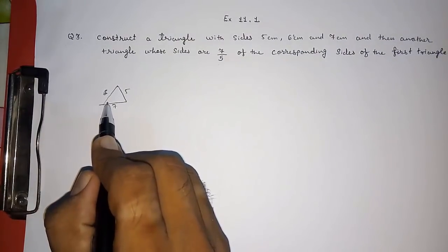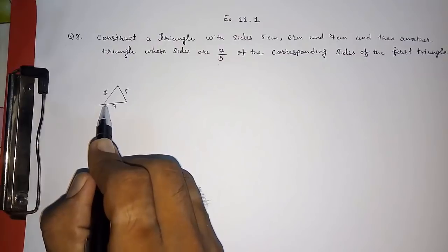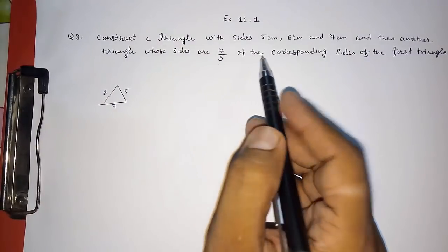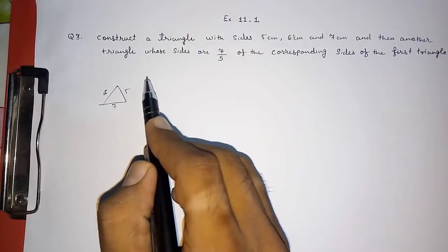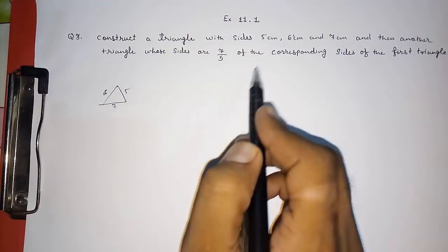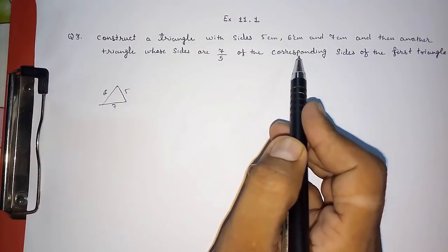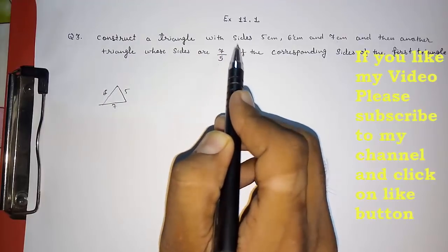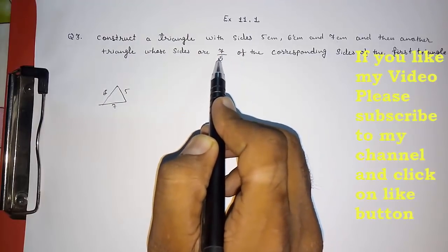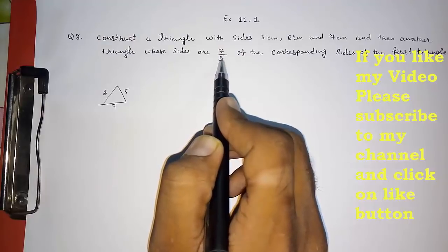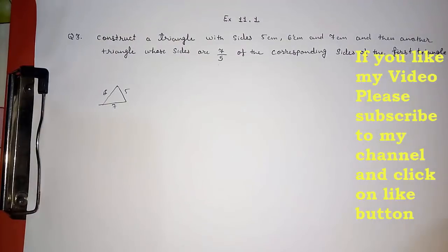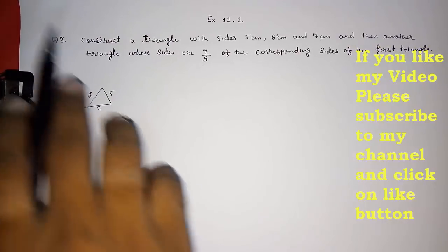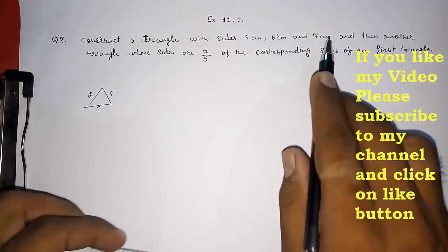That triangle will be exterior to this triangle. So we have to first decide: is the new triangle in the interior or exterior of the given triangle? Here we are getting an improper fraction, so the new triangle is exterior. When we have a proper fraction, at that time we draw the triangle in the interior.